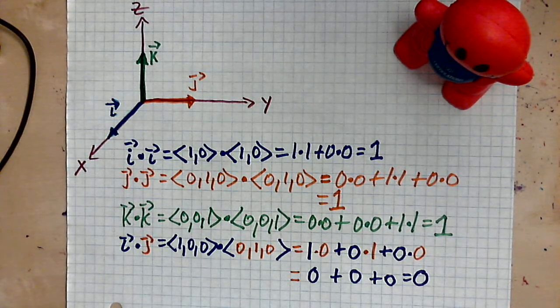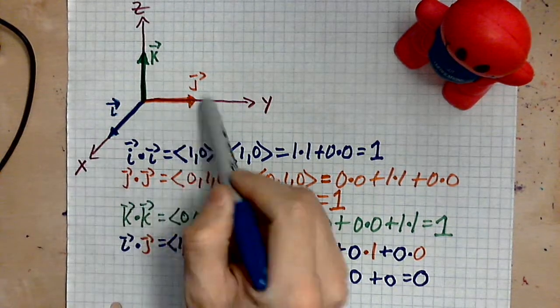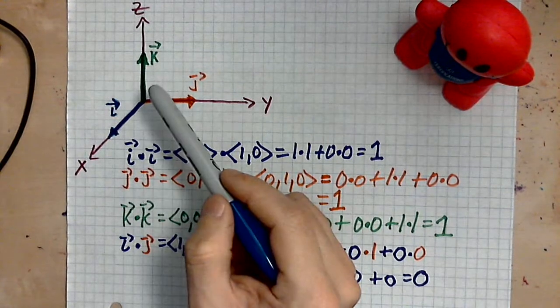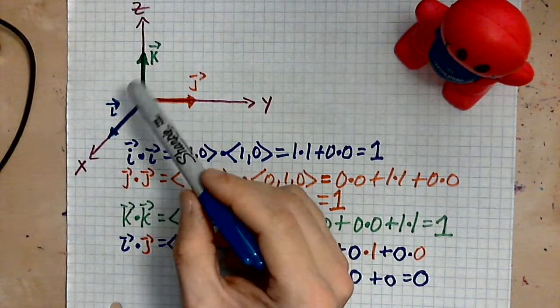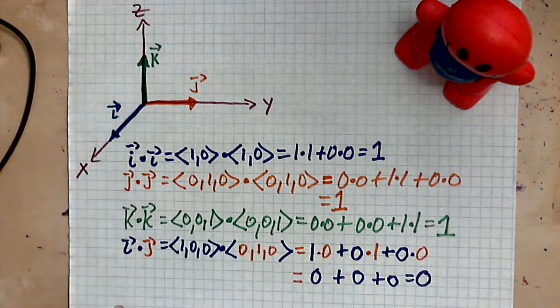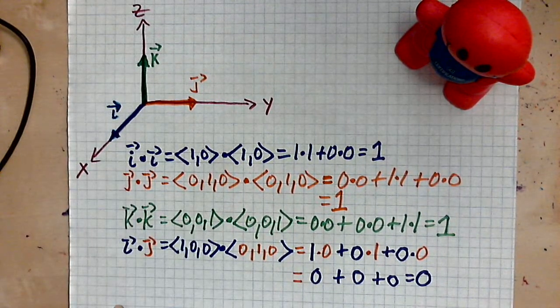This is how you find these basic dot products for unit vectors along the coordinate axes. So remember, review, review, review. This is a coordinate system: X, Y, and Z. These are unit vectors because each one has a length of 1. The letters we use to represent them are I, J, and K.